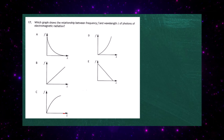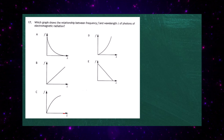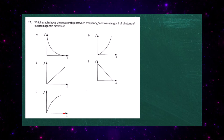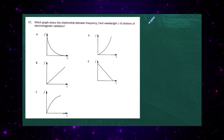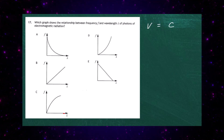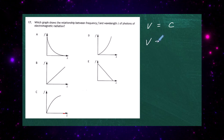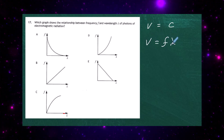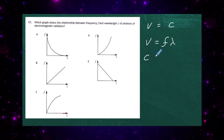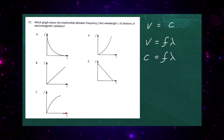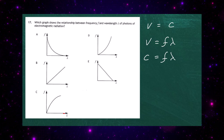Question 17 from Paper 1 of the 2023 Higher Physics Examination — which graph shows the relationship between frequency f and wavelength lambda of photons of electromagnetic radiation? Well, we know that all electromagnetic radiation travels at the speed of light, so the speed v equals c, a constant. We know that the speed of a wave v equals frequency times wavelength, and since v becomes c, we have c equals frequency times wavelength.